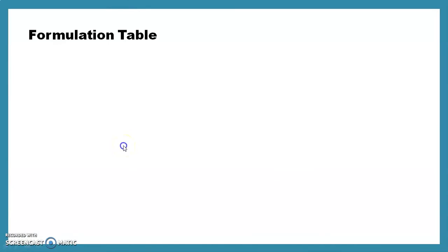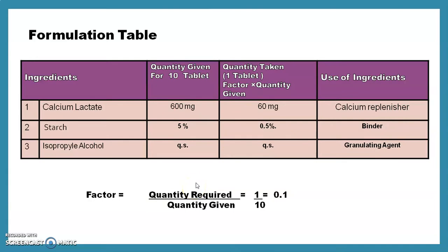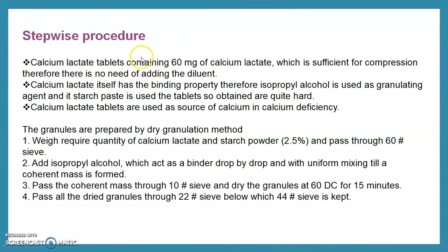The formulation table for today's preparation contains ingredients, quantity given, and quantity taken. Ingredients are calcium lactate, starch, and isopropyl alcohol. Calcium lactate is a calcium replenisher; starch is a binder; isopropyl alcohol is used as the granulating agent in quantity sufficient. The formula is given for 10 tablets, but today we prepare granules for only one tablet, so the factor is 0.1. Multiply the given quantities by 0.1 to get the quantities taken.